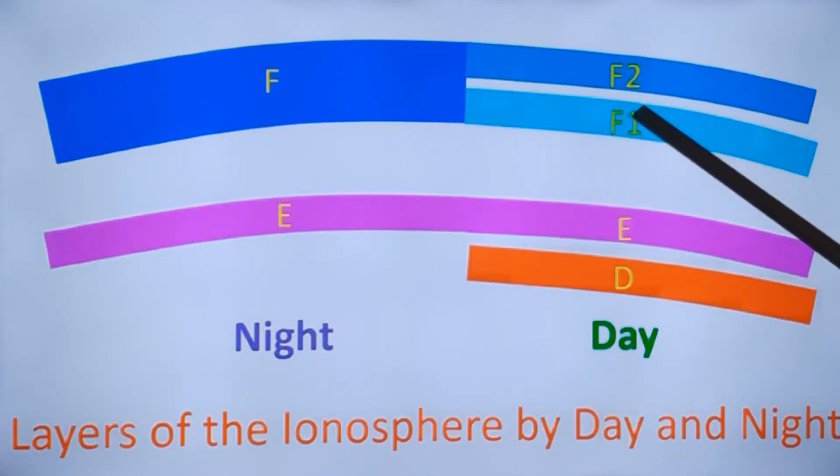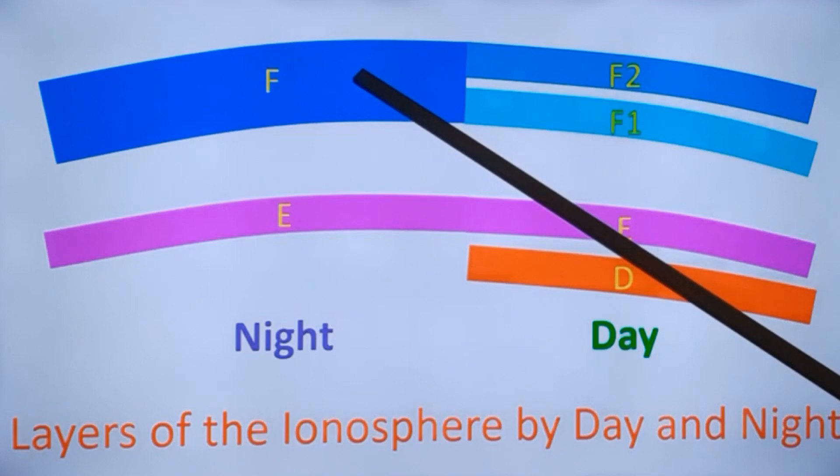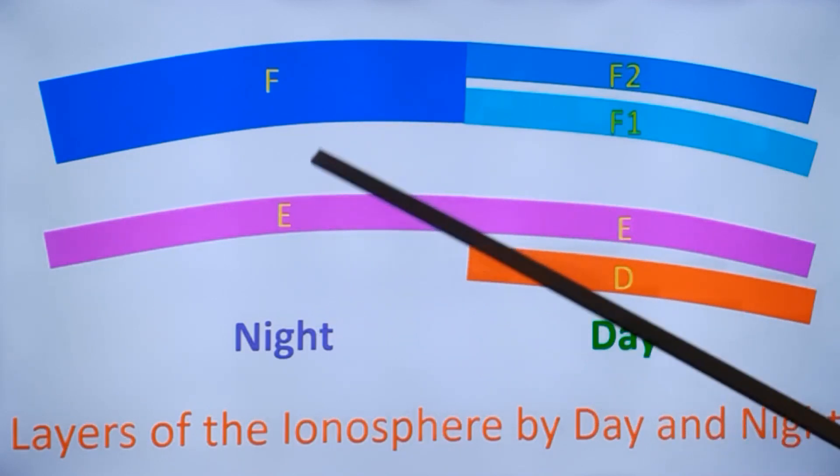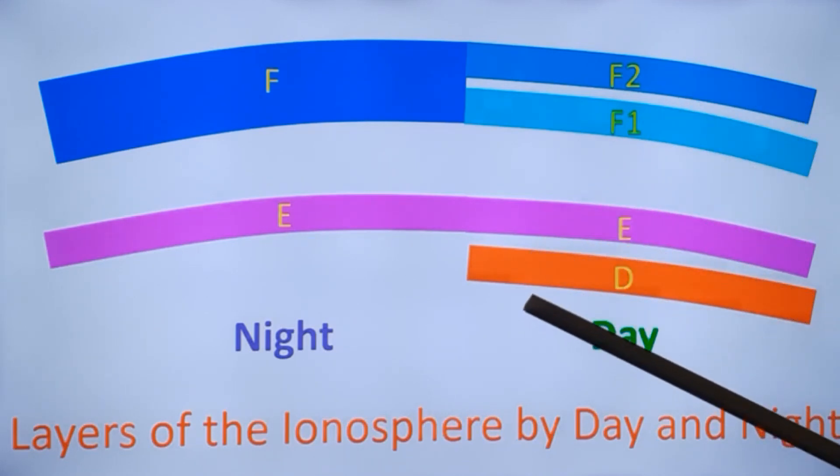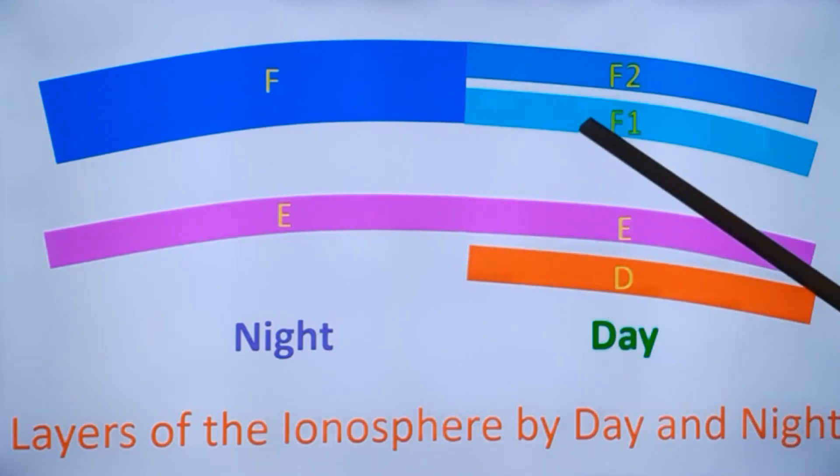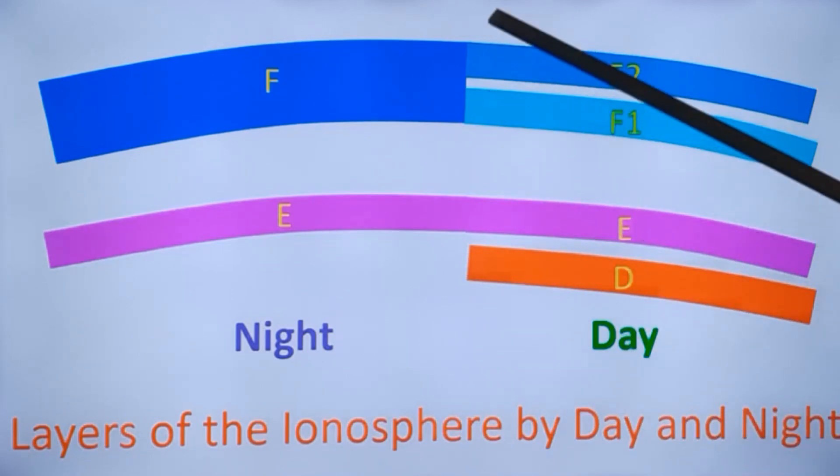At night when the ionization decreases, these two layers fuse together and there is only one F layer at night and only one E layer. There is no D layer at night, E and F only at night, while at day there are several layers: D which absorbs medium waves, E which reflects short waves of the lower range, F1 and F2 which reflects short waves of higher frequency. When the frequency goes beyond that range, that is beyond 30 MHz, usually it may not get reflected by any of these layers and it will go straight into space.